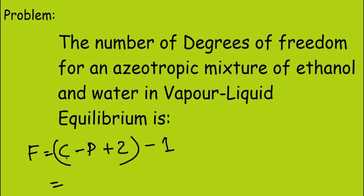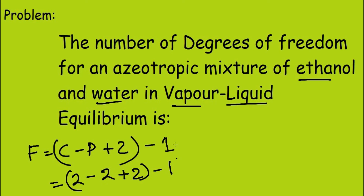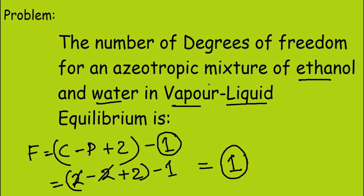The number of components is 2 because we have ethanol and water, and the number of phases is 2 because we have vapor and liquid. So F equals 2 minus 2 plus 2 minus 1, where the minus 1 accounts for the azeotrope. This equals 1, so the degrees of freedom is 1.